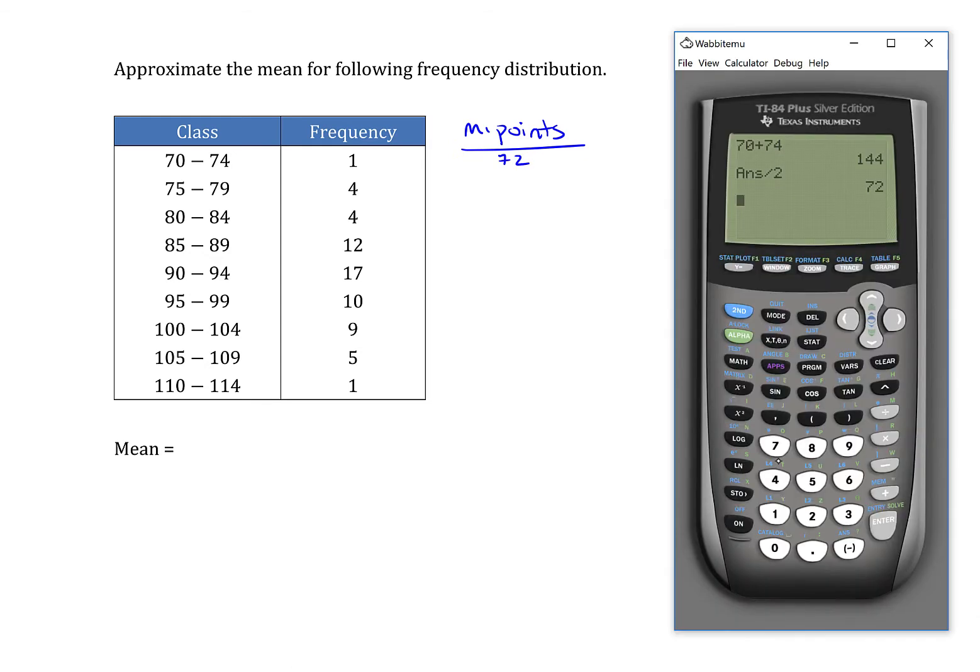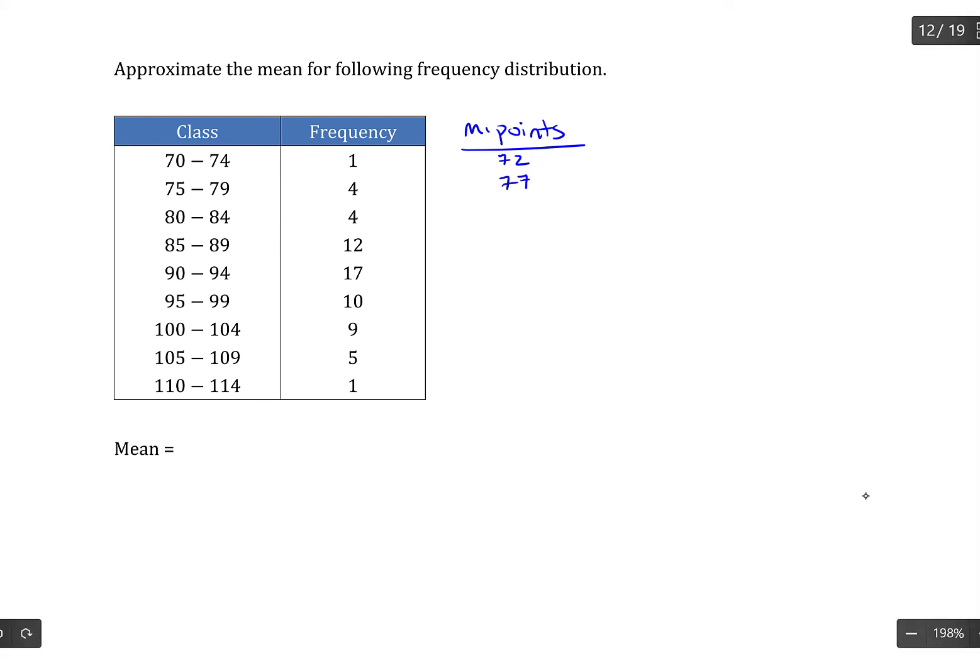If I do the same for the next class, 75 plus 79 divided by 2, then I get 77. And if you'll notice, if I subtract 77 and 72, I get 5.